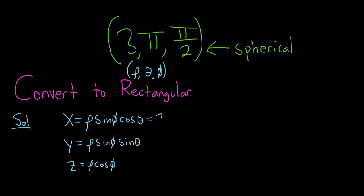So rho is 3. Then we have the sine of phi. So phi is this one here, it's the third component. So sine of pi over 2. And then cosine of theta, that's the second component. So that will be cosine of pi.